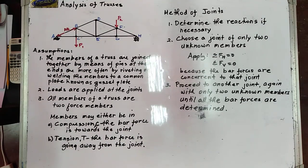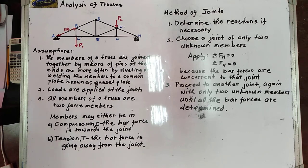Another rule: when three members form a truss joint, for which two of the members are collinear and the third forms an angle with the first two, then the non-collinear member is a zero-force member, provided no external force or support reaction is applied to that joint. The two collinear members carry equal loads.